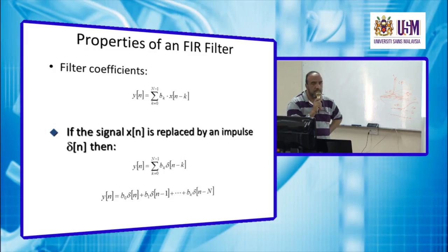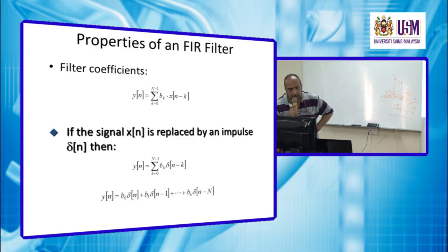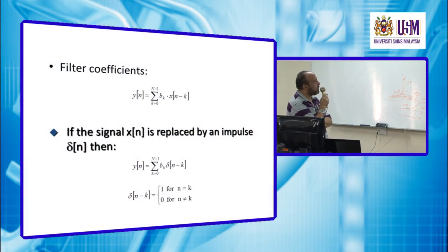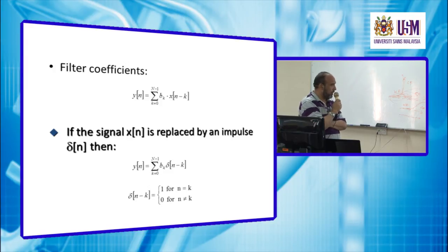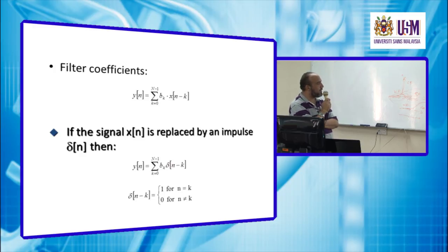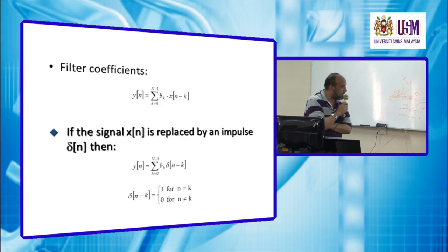Continuing to the general form for all n: y(n) = b₀δ(n) + b₁δ(n−1) + ··· + bₙδ(n−N). Using the property of the delta function — δ(n−k) = 1 when n = k, and zero otherwise — the summation reduces to a single non-zero term at each value of n.